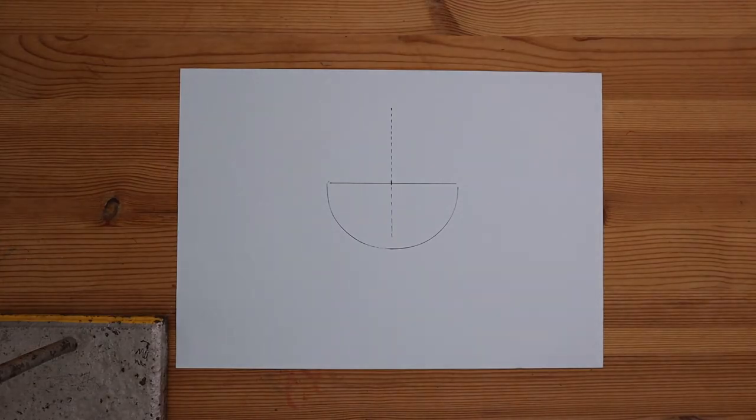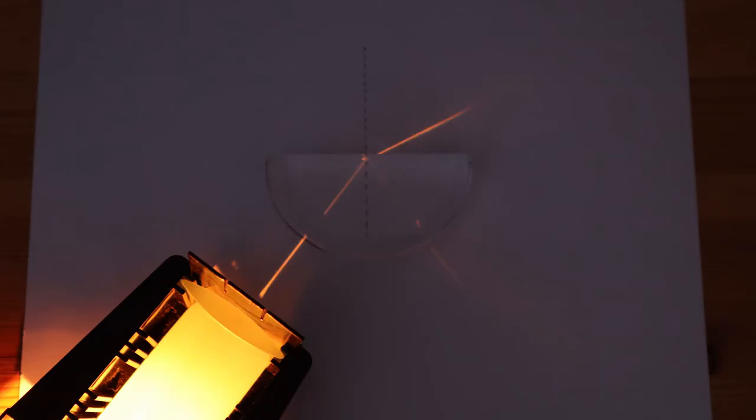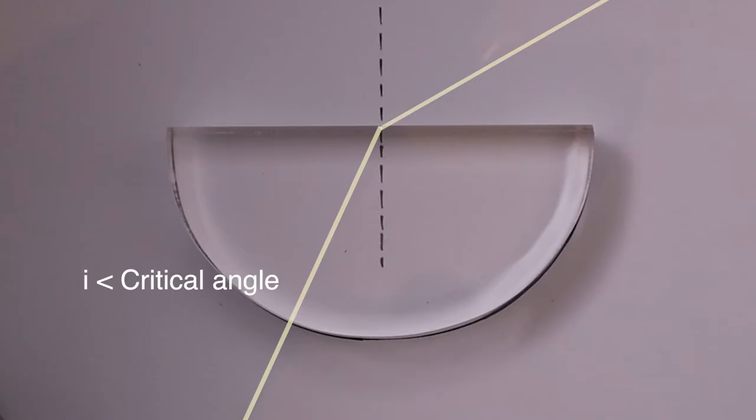To find the critical angle of the block, we must look at the ray from the denser medium to the less dense medium. In this case, we should observe the path going through the perspex, going through into the air. When the angle of incidence is smaller than the critical angle, the light is refracted into the air.